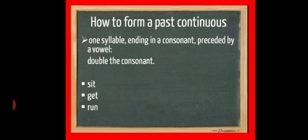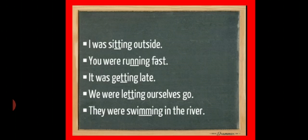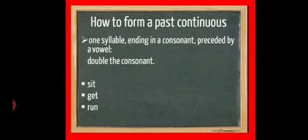Now if we have one syllable ending in a consonant, preceded by a vowel, like sit, where t is a consonant and i is a vowel, then what will we do? We will double the consonant. Like I was sitting, sit becomes sitting, run becomes running, get becomes getting, let becomes letting and swim becomes swimming. We have doubled the consonant.